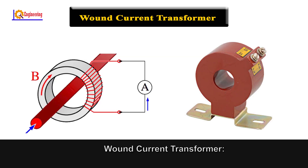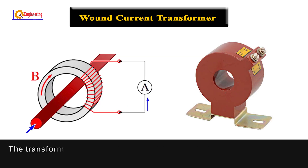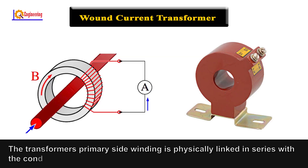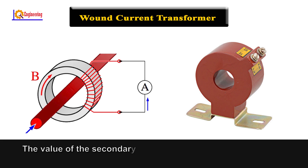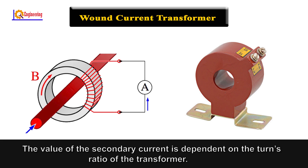Wound current transformer: The transformer's primary side winding is physically linked in series with the conductor that carries the measured current in the circuit. The value of the secondary current is dependent on the turns ratio of the transformer.